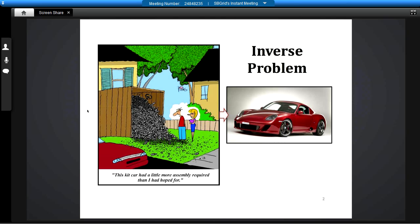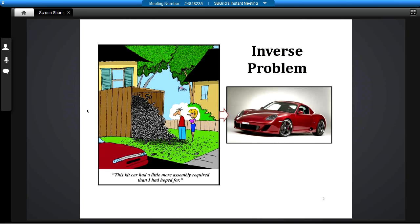What is the main goal of crystallography? You're supposed to start from the data and your main goal is to get to the beautiful model. Unfortunately, this is the type of problem which is called an inverse problem. And inverse problems in crystallography are pretty nasty problems. They are not only hierarchical, but also they are called ill-posed and ill-conditioned.